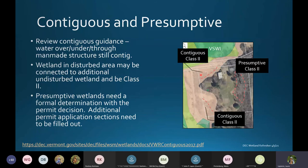Same for this wetland: even though it's across the street from the mapped VSVI, there's a culvert that goes across. Where water goes over, under, or through manmade structures, that wetland is still considered contiguous and protected.